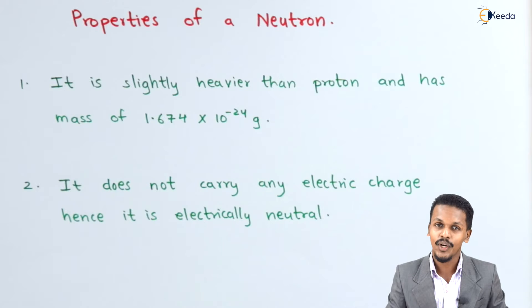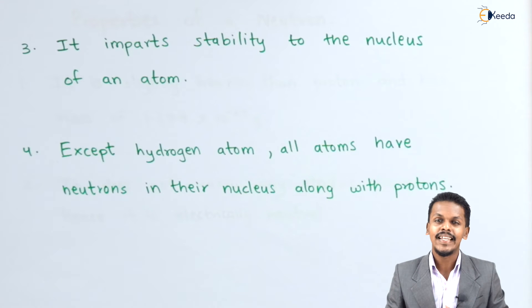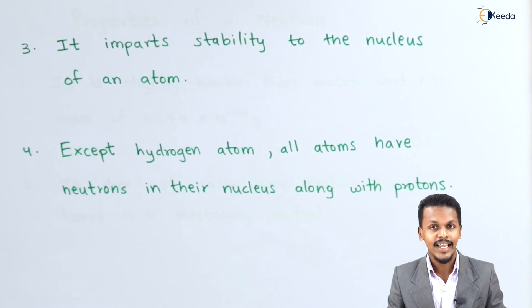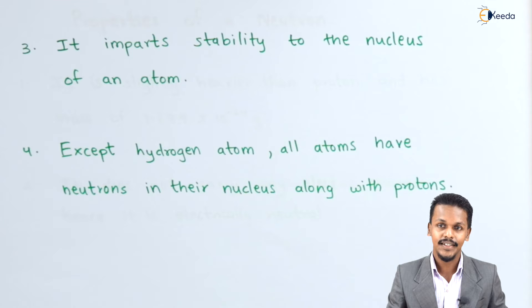The next point: the nucleus of an atom consists of protons and neutrons. The presence of neutrons and protons provides stability to the atom. That's the third point.